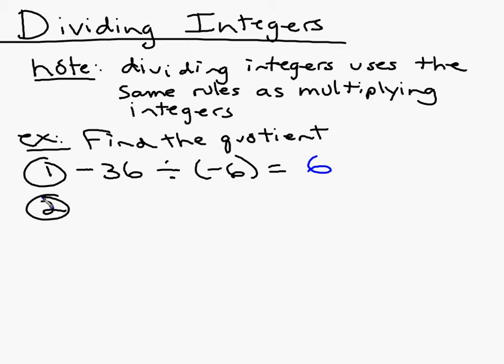Number 2, how about 27 divided by negative 9? Well, now we have a positive divided by a negative, so my answer is going to be a negative what? 3.